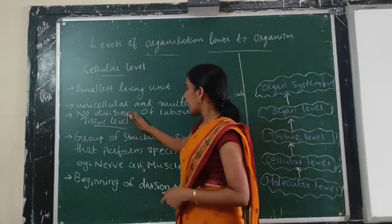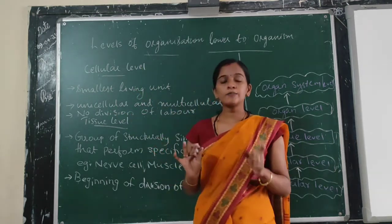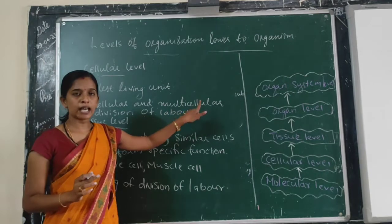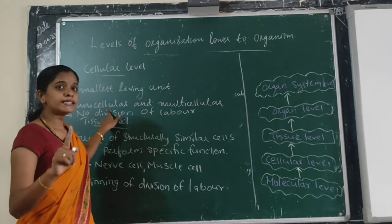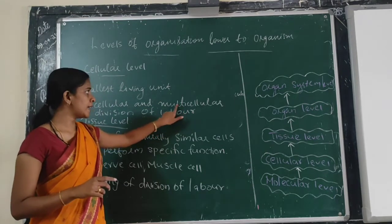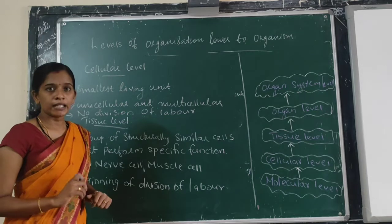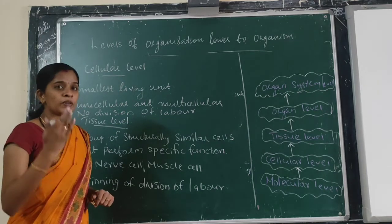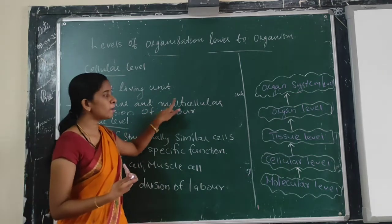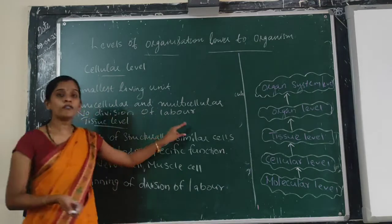There is no tissue level in these simple multicellular organisms. Cellular level means cells are the smallest living units. In unicellular organisms one cell does everything, while in simple multicellular organisms the cells are grouped but they function independently and lack the tissue level.